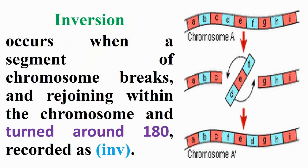Inverted chromosome occurs when a segment of chromosome breaks and rejoins within the chromosome, turned around 180 degrees. Therefore, it is recorded as INV, as mentioned in the figures inserted in this slide and next slides.